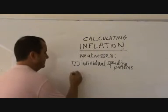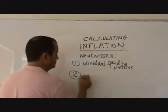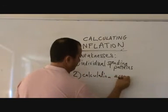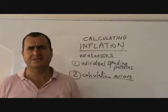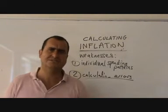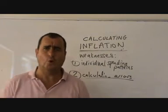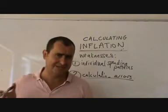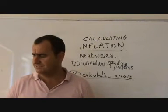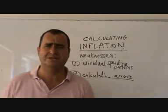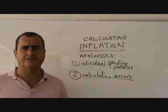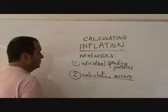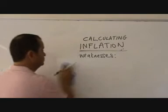A second weakness is sheer calculation errors. How easy can it be to collect 150,000 prices for 650 different goods all on the same day? It can't really happen perfectly. There's lack of data, misrepresentations and miscalculations in the data, and this all feeds into the overall inaccuracy of the calculation of the inflation rate.